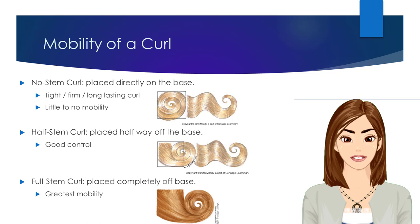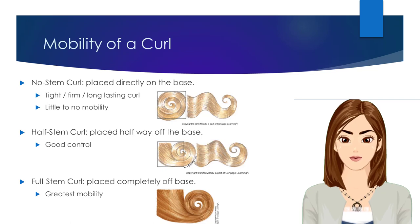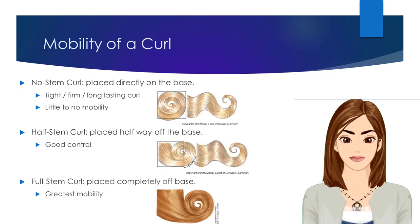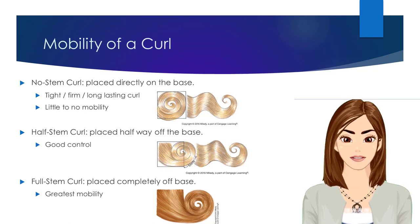The stem determines the direction and mobility of a curl. Curl mobility is defined by how much of the stem is exposed when placing the curl on its base section. The no stem pin curl is one in which the circle portion of the curl is wound all the way down to the base section, and has no stem showing. A no stem pin curl produces a tight, firm, long-lasting curl, and allows for little to no movement. A half stem pin curl is one in which the circle is wound to place the curl halfway on, and halfway off of, the base section.